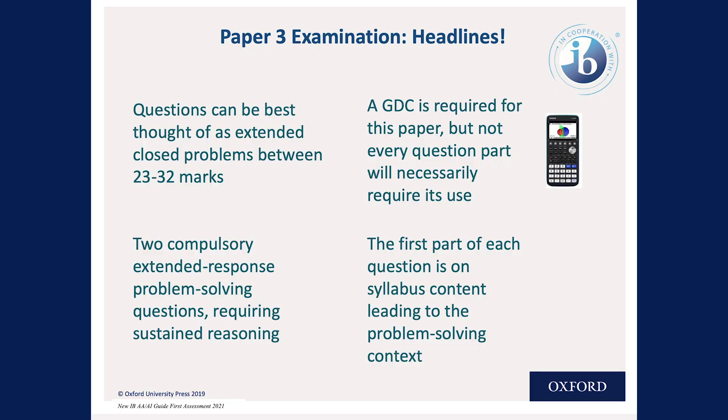Here are some headlines about what the paper three examination looks like. Questions can be thought of as extended closed problems, ranging between 23 and 32 marks. There are two compulsory extended response questions requiring sustained reasoning as students work through the problems. A GDC is required for both pathways, though it may not be needed for every part of every question. The first part of each question is based on syllabus content, leading to a problem-solving context as the question progresses.